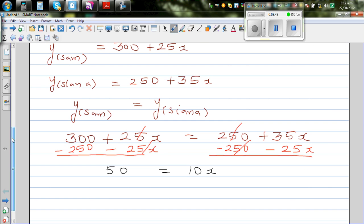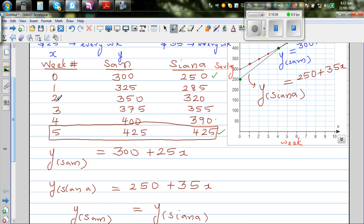Now I'm going to divide both sides by 10. So 50 divided by 10 is equal to 10x divided by 10. This implies x is equal to 5. And that's what we got. When x is 5, the savings are equal.